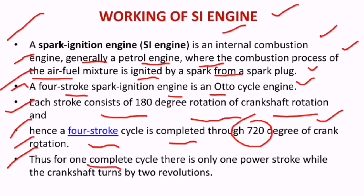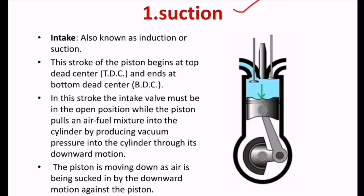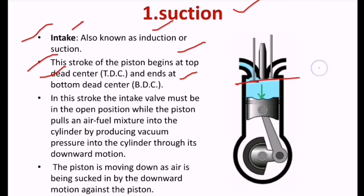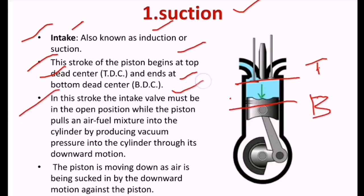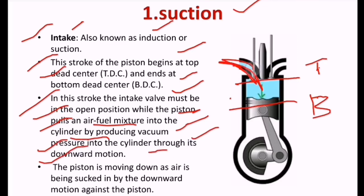For one complete cycle there is only one power stroke while the crankshaft turns two revolutions. The first stroke is the suction stroke, also called intake or induction. This stroke begins at TDC (top dead center) and ends at BDC (bottom dead center). The intake valve must be open while the piston pulls the air-fuel mixture into the cylinder by producing vacuum pressure through its downward motion. When the inlet valve opens, the air-fuel mixture comes inside and the piston moves downwards.